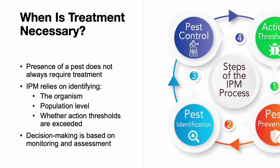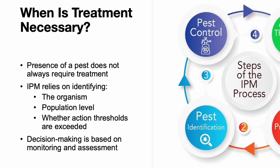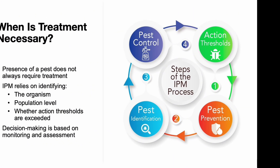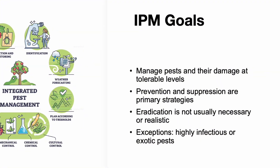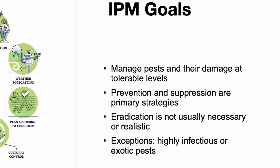We assess the pest population, determine whether it's causing real damage, and only intervene if action thresholds are crossed. This avoids unnecessary treatment and helps preserve the balance of the ecosystem. The main goal of IPM is not pest eradication — it's pest management. We aim to keep pest populations at levels where they don't cause unacceptable harm. Eradication is rarely necessary and often not achievable.